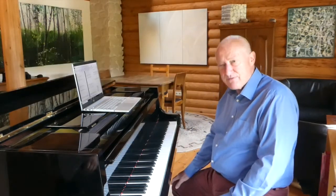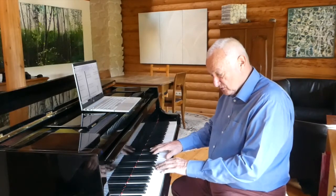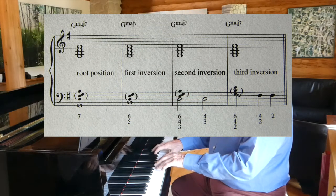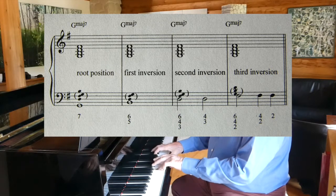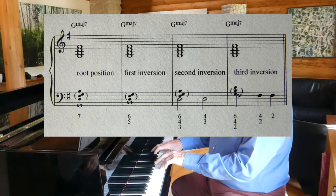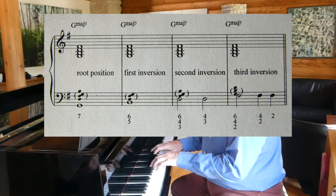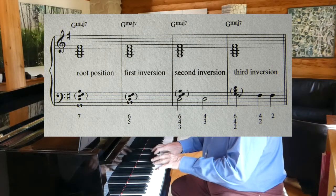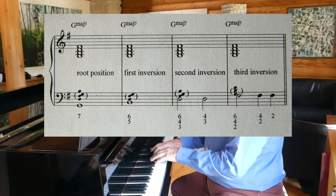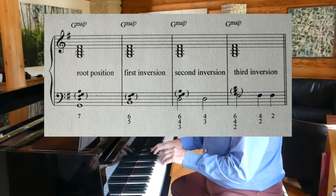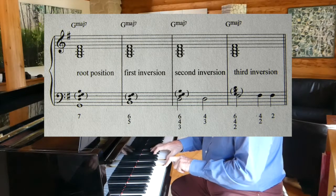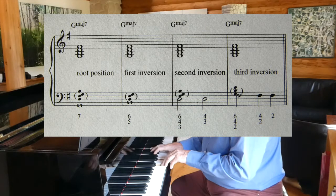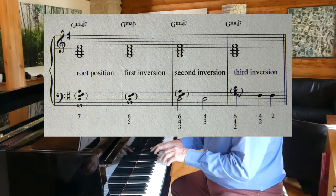Now we'll have to talk about 7th chords. The root position just appears with a 7. The first inversion looks more complicated because the intervals are now a 6 and a 5, so this is 6-5 — the third will usually be left out, so you'll just see 6-5 for this chord. Then the second inversion: the fourth is important and the third is important, so you're probably going to see 4-3. The sixth will usually be left out, but it may appear as well.